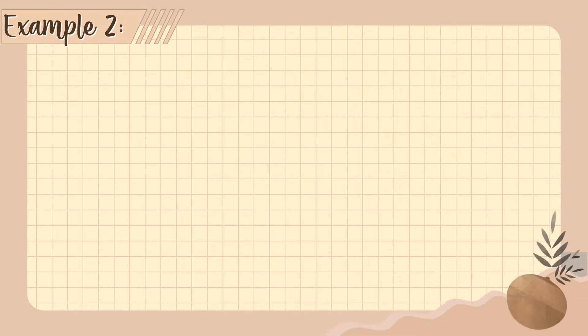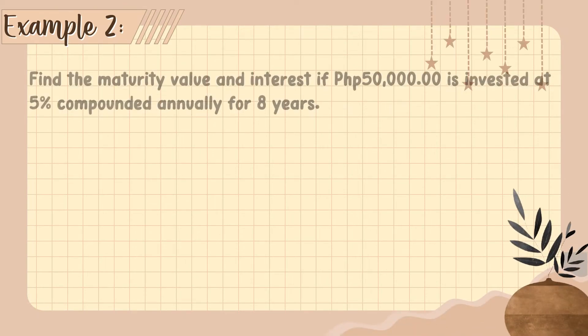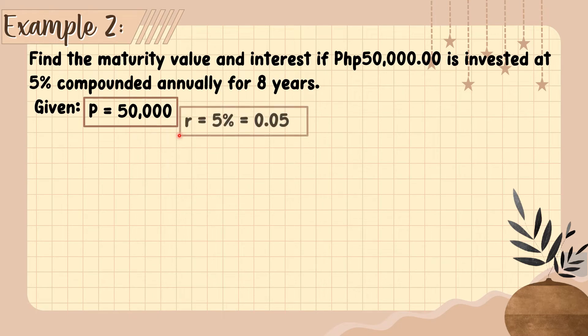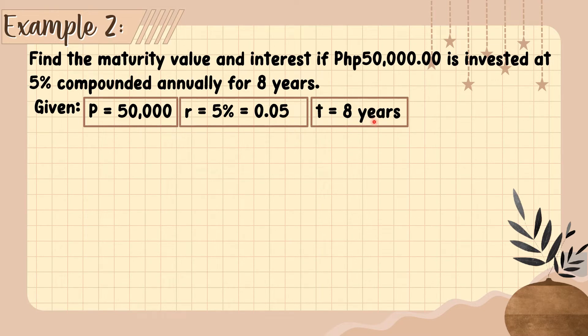Let's have example number 2. Find the maturity value and interest if 50,000 pesos is invested at 5% compounded annually for 8 years. We have the given: P is 50,000, rate is 5% or 0.05, and t is 8 years. Let's find the maturity value and compound interest.